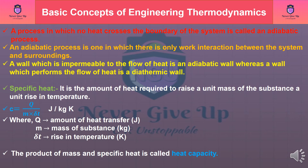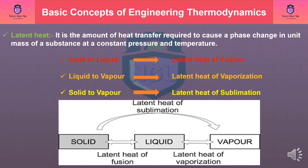The product of mass and specific heat is called heat capacity. Latent heat: it is the amount of heat transfer required to cause a phase change in unit mass of a substance at constant pressure and temperature. Conversion of solid into liquid is called latent heat of fusion. Conversion of liquid into vapor is called latent heat of vaporization. Conversion of solid into vapor is called latent heat of sublimation.